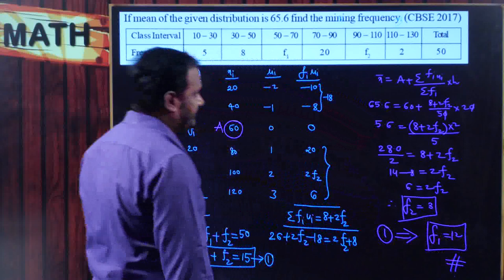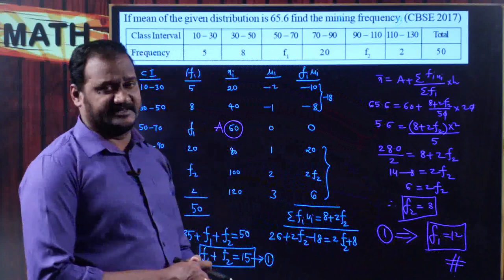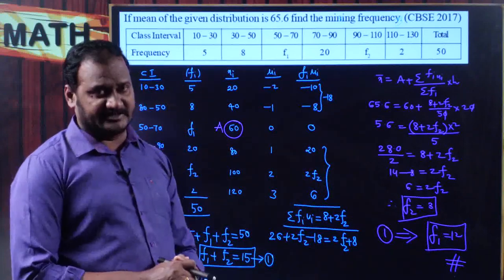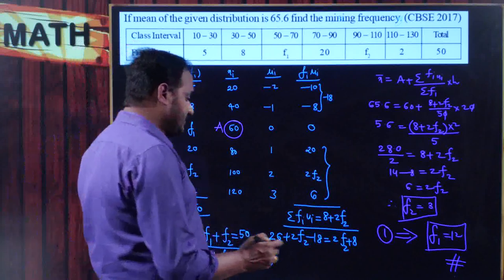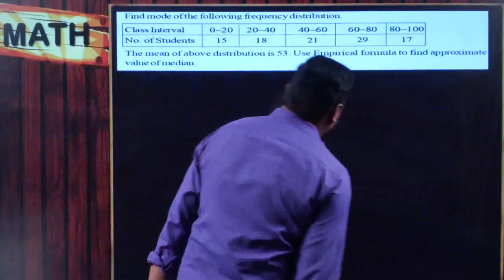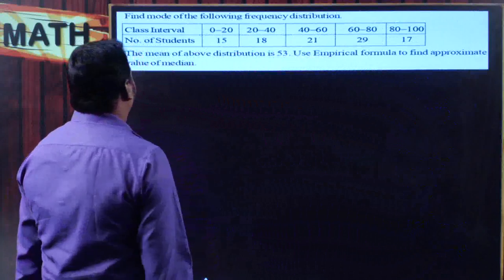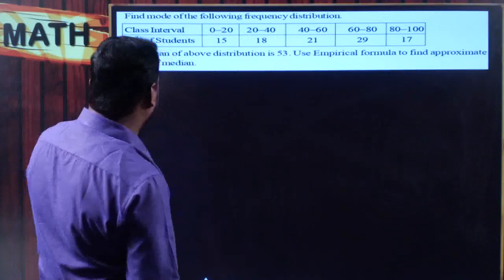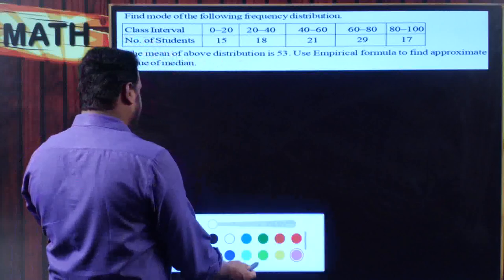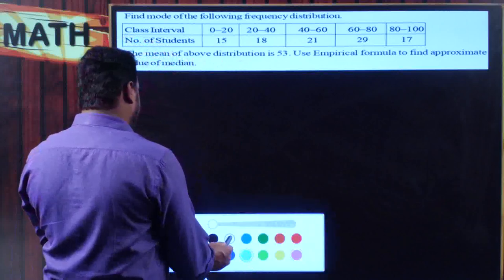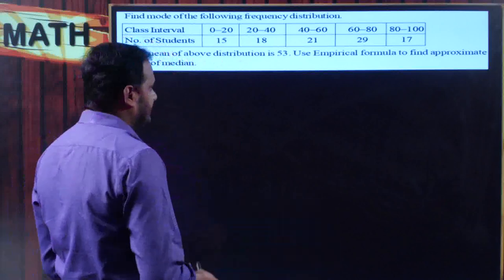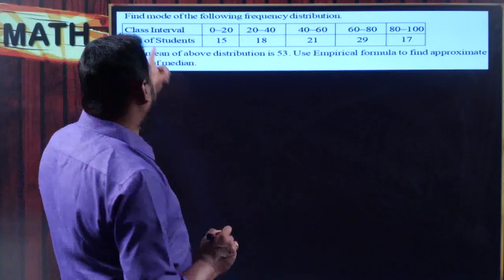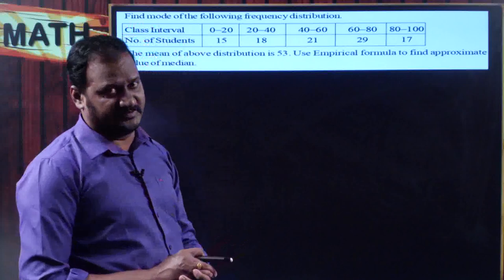This is how we find missing frequencies f1 and f2 using the given information. Hope you understand. Moving on to the next problem: find the mode of the frequency distribution. The mean is also given and using those two we find the median by empirical relationship.